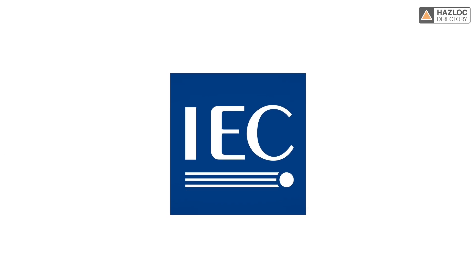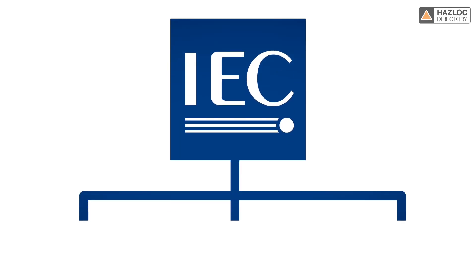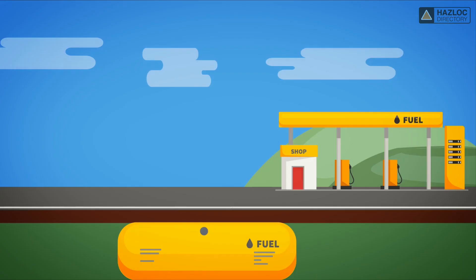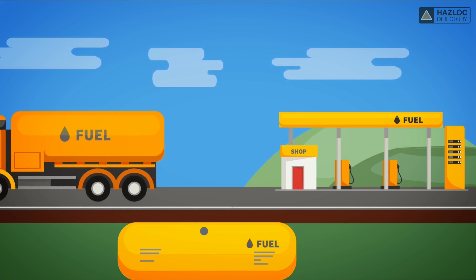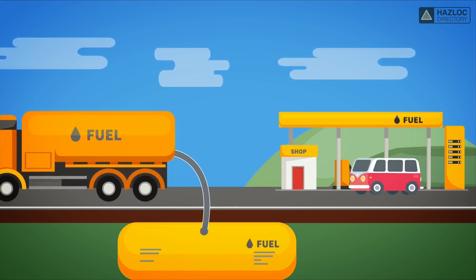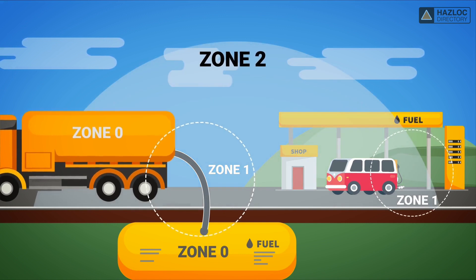As per International Electrotechnical Committee standards, the classified areas are categorized in three groups: Zone 0, Zone 1, and Zone 2. This diagram of a typical petrol station shows the areas classified as Zone 0, Zone 1, and Zone 2.